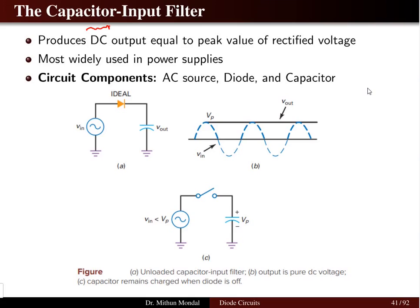The next topic we will cover is the capacitor input filter and its application in power systems and devices. The capacitor input filter produces a DC output which is equal to the peak value of the rectified voltage. The rectification principle requires a diode — in this case, we take one ideal diode. The AC source has a certain frequency and the output is taken across the capacitor, so the DC voltage produced across the capacitor equals the peak value of the rectified voltage.